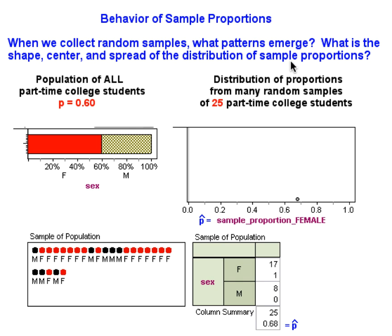To investigate these questions, we're going to return to the familiar context of the previous example and look at the population of all part-time college students. We're assuming that 60% of this population is female. Now, what we're going to be investigating in this movie is what happens as we begin to take random samples from this population.